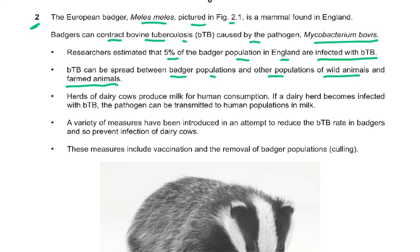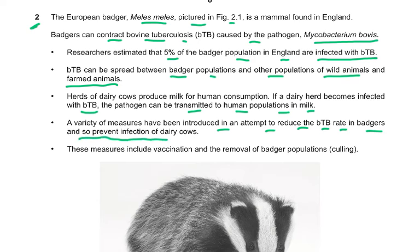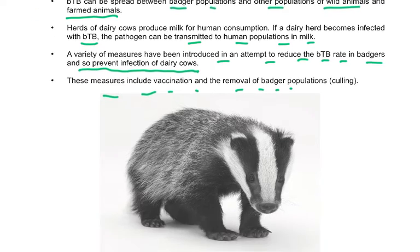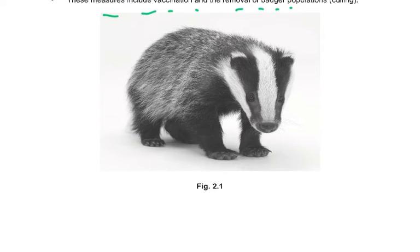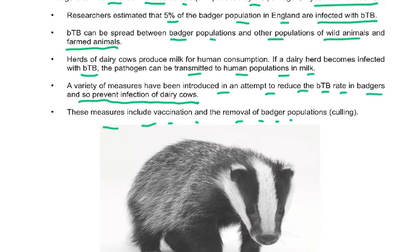Herds of dairy cows produce milk for human consumption. If a dairy herd becomes infected with bovine tuberculosis, the pathogen can be transmitted to human populations in milk. A variety of measures have been introduced to reduce the BTB rate in badgers and prevent infection of dairy cows, including vaccination and removal of badger populations, which is called culling.